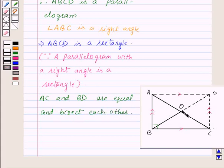Thus O is the midpoint of AC and BD. So let's write that.